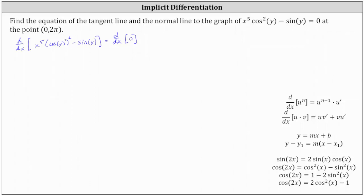Differentiating x to the fifth times the square of cosine y with respect to x, we'll need to apply the product rule. We have the first function, x to the fifth, times the derivative of the square of cosine y with respect to x. That gives us two times cosine y to the first times the derivative of the inner function cosine y, which is negative sine y, and then because we have a function of y, a factor of dy/dx. Plus the second function, the square of cosine y, times the derivative of the first function, which is five x to the fourth.